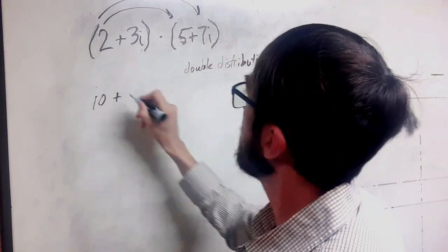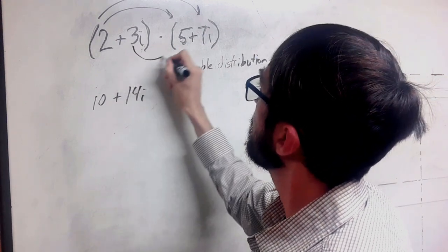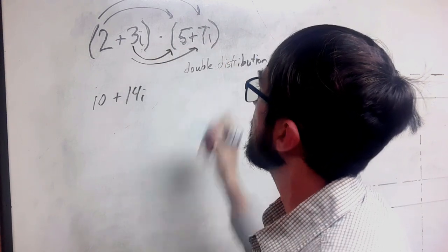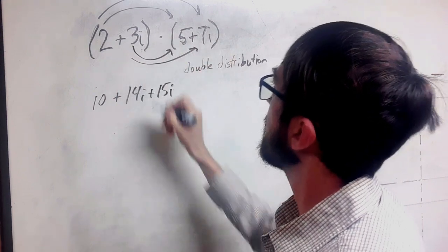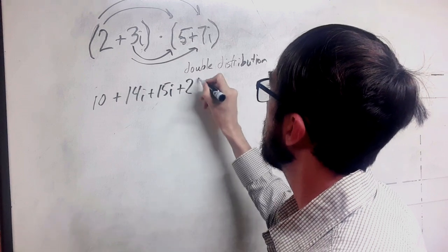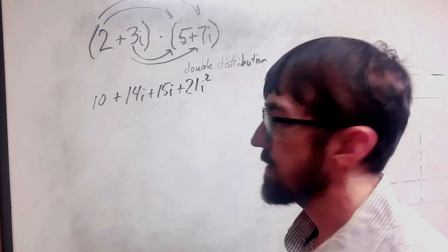And 2 times 7 is 14. We carry that i with us. And then we're going to multiply the 3i by each of those. 3 times 5 is 15. We bring the i with us. 3 times 7 is 21. And we have two i's this time. So we're multiplying. That's i squared.